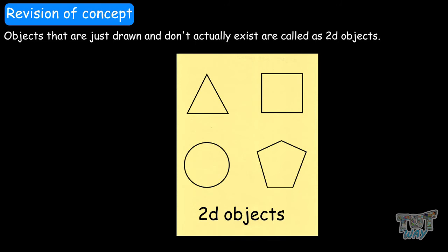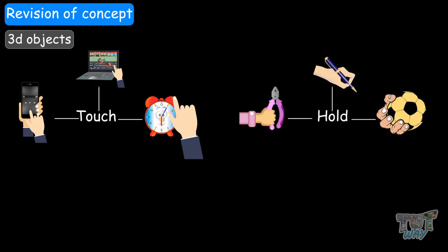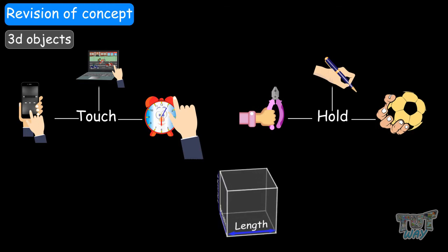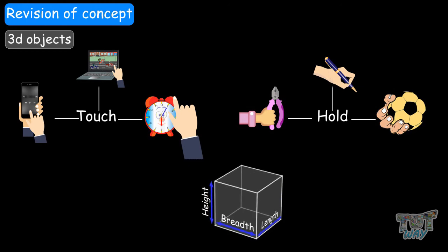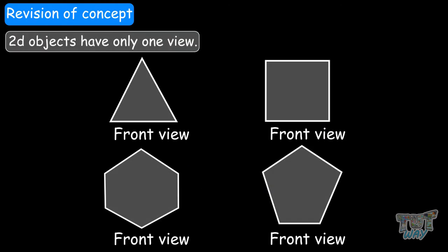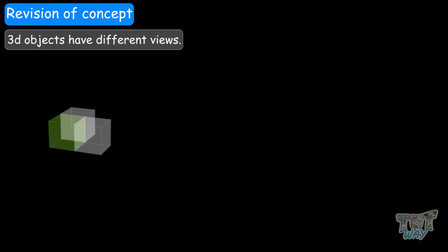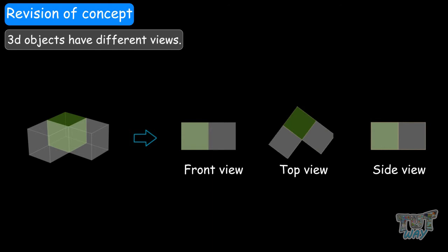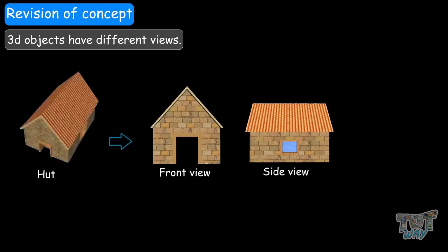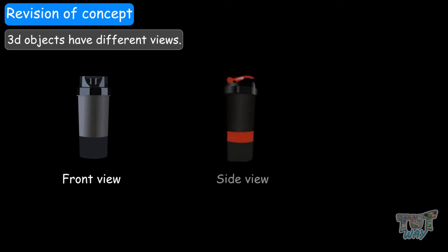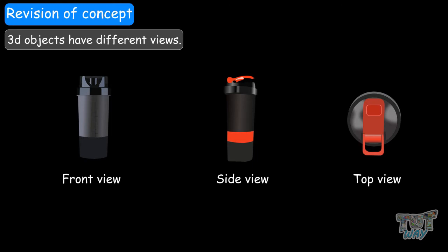Everything that you draw is a 2D object, and everything that you can touch and hold in your hand, that occupies space and has three dimensions — length, breadth, and height — is a 3D object. 2D objects only have one view, but 3D objects have different views: a front view, top view, and side view, and they can all be different or some can be the same. For example, this hut has a different front, side, and top view, whereas in the case of this tube, the front view is the same as the side view.